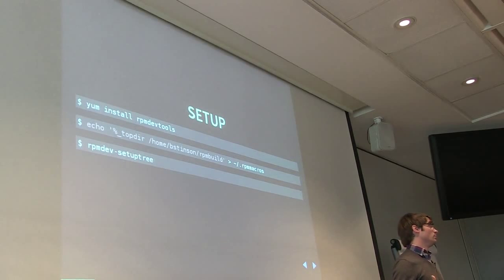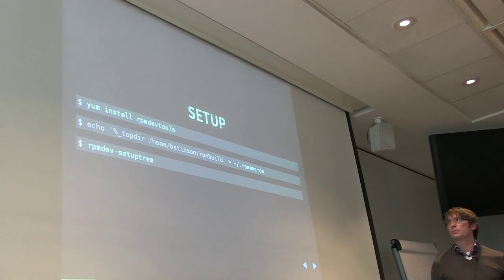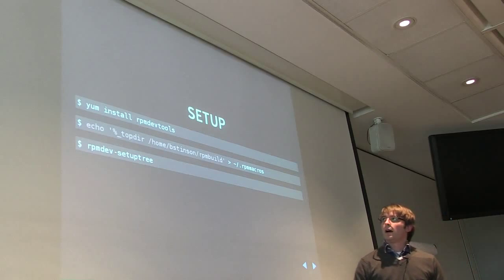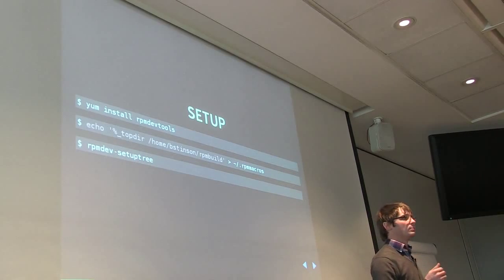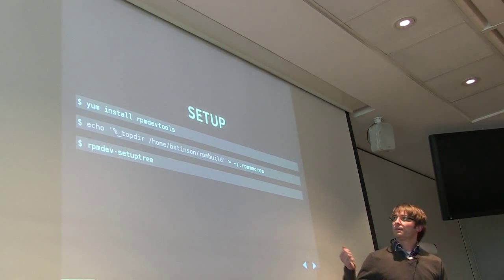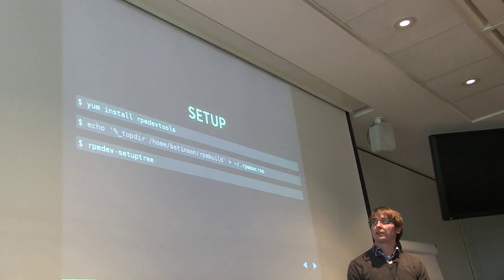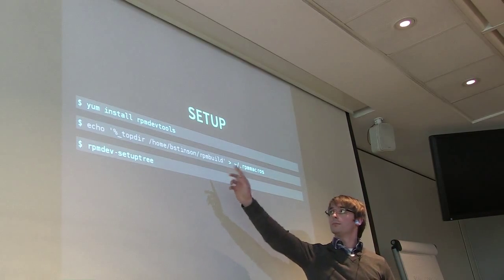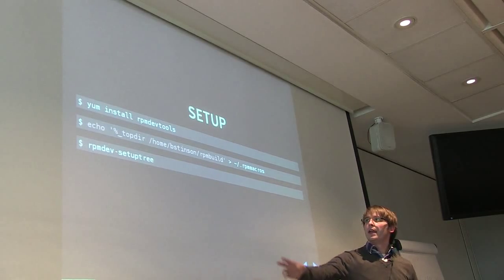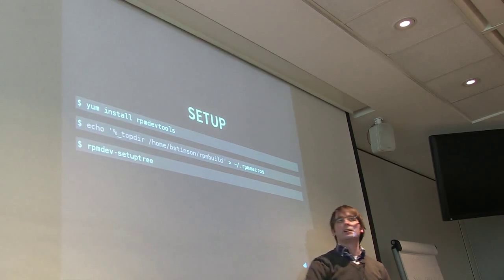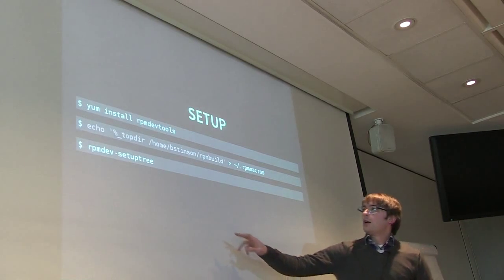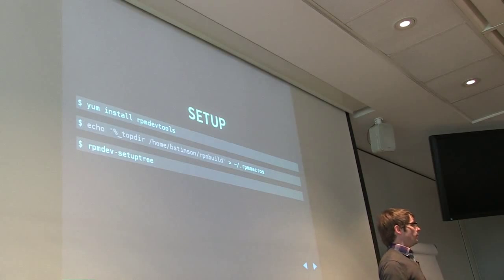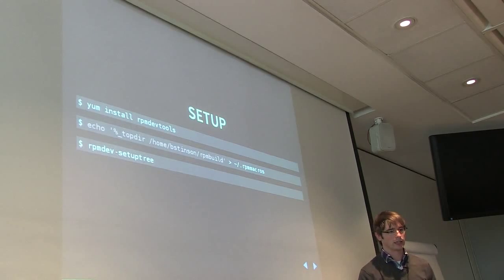This is a collection of things that will help you in your package building process. When I started off doing RPMs sort of one-on-one, I just set up my RPM build directory in my home directory. This line right here just tells RPM build where to look for all that stuff. The RPM Dev setup tree is going to build all of the directories that it needs, because there are a few that we'll be looking at today.